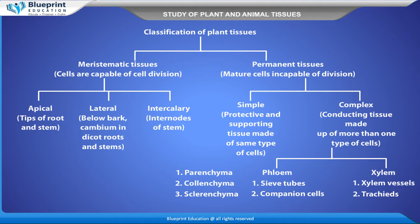Simple permanent tissues include parenchyma, colenchyma, and sclerenchyma. Complex permanent tissues include phloem — with sieve tubes and companion cells — and xylem — with xylem vessels and tracheids.